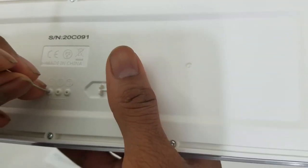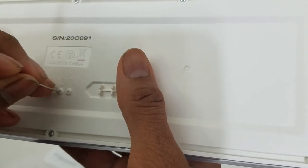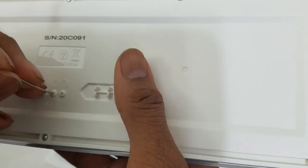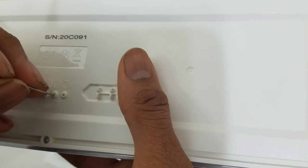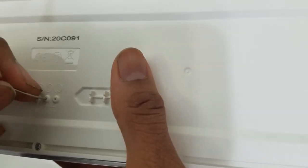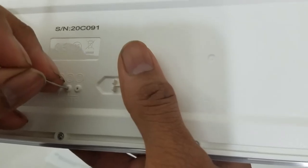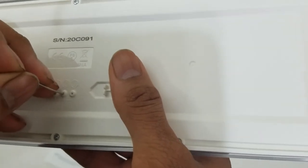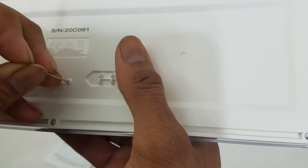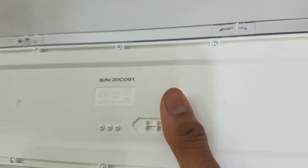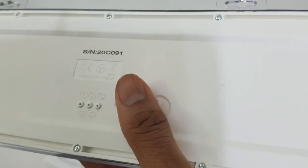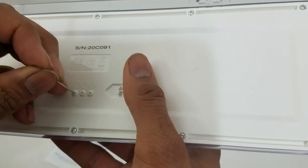Option number two will turn on with dim operation and will only be at full capacity or full brightness once it detects motion. Option number three will only turn on when there is motion, otherwise it will remain off. I personally prefer to use the first one, that way it is completely bright and completely lit.